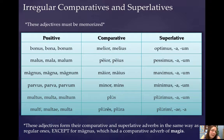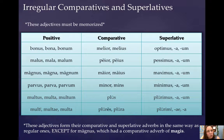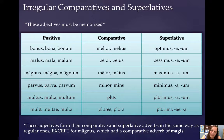Malus, mala, malum, meaning bad, becomes peior, peius, which means worse, or pessimus, pessima, pessimum, which means worst. Hopefully you can see the English derivatives we get from optimus and pessimus: an optimist is someone who thinks the best of everything, and a pessimist is one who thinks the worst.